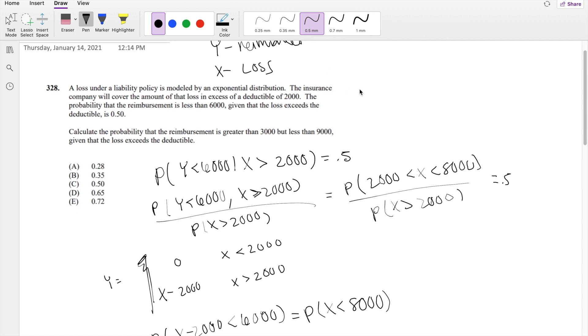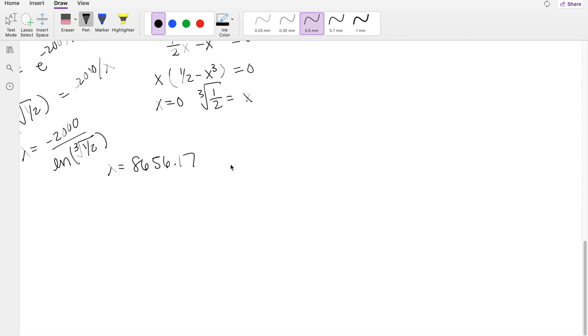So what are we looking for here? The probability that reimbursement is greater than 3,000 but less than 9,000, given that the probability, given that X is greater than 2,000.